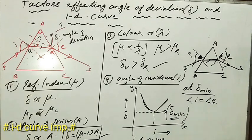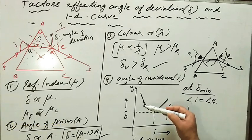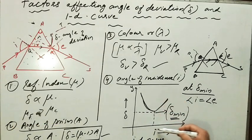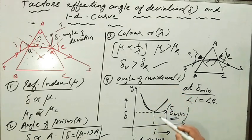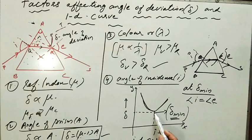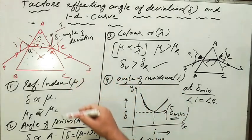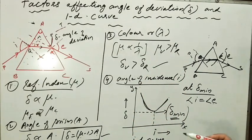So this is the minimum deviation position. Please remember all these points: the factors affecting the angle of deviation and the ID curve. As the angle of incidence increases, the angle of deviation decreases to a minimum value delta minimum, and then increases again upon further increase in angle of incidence.